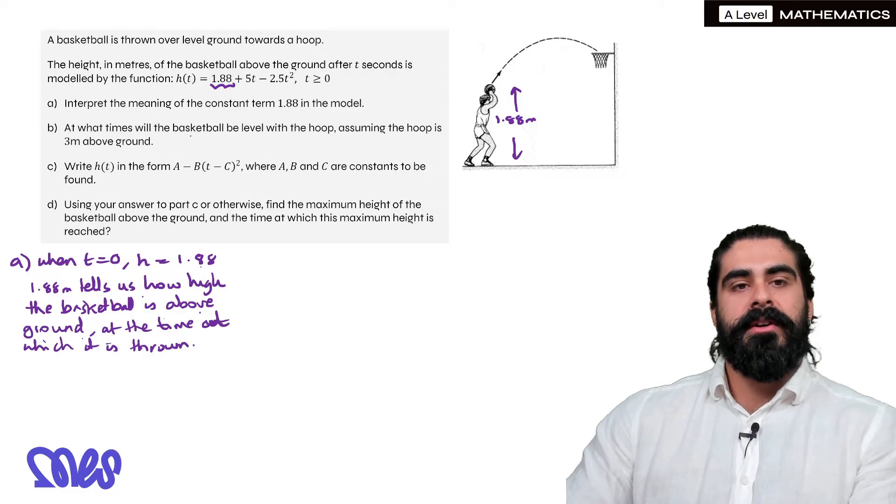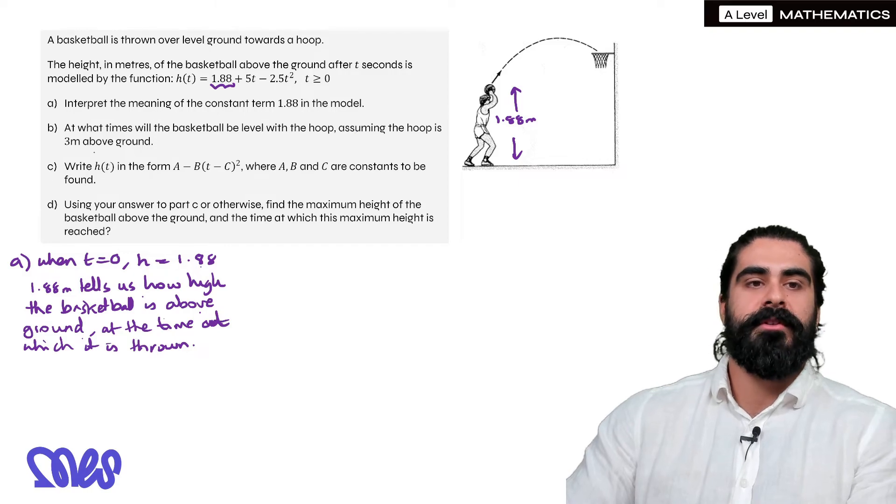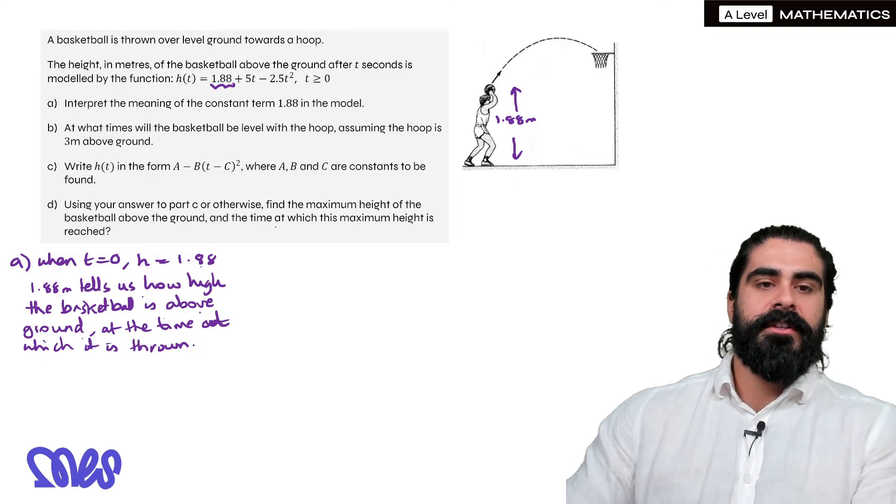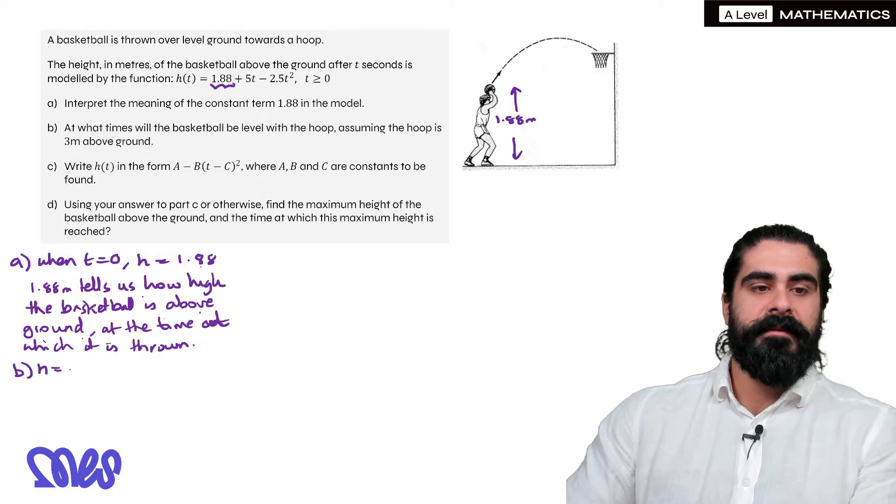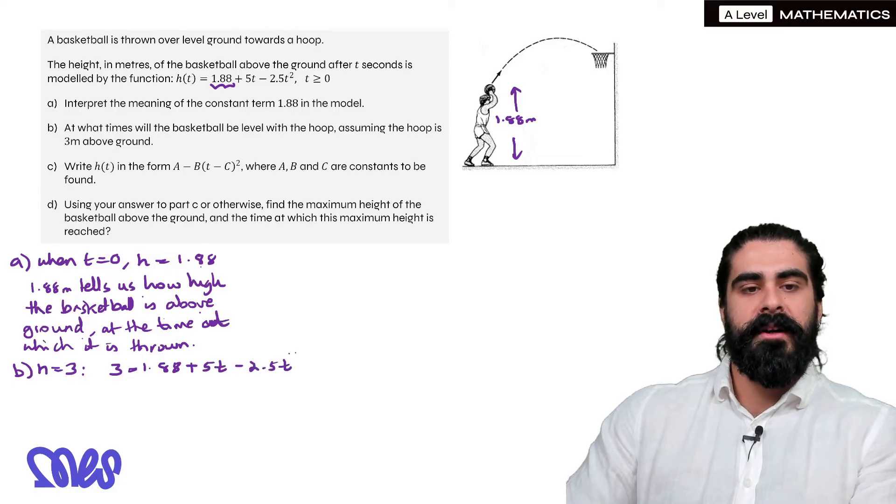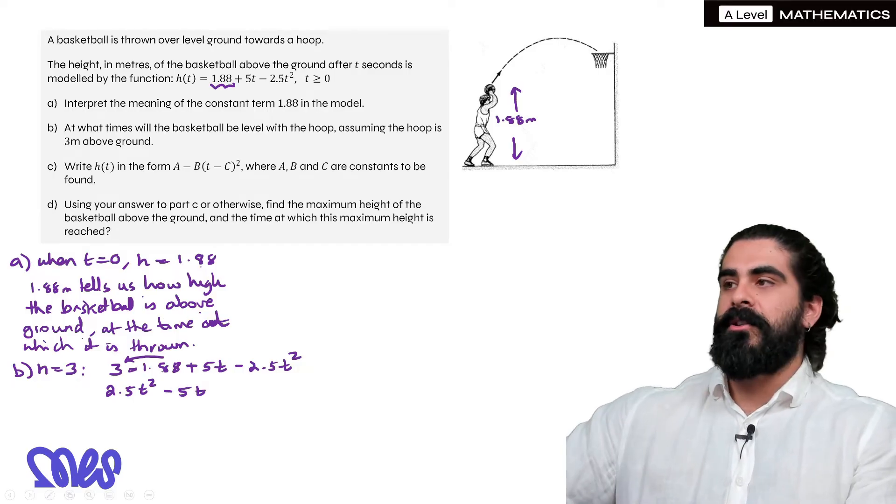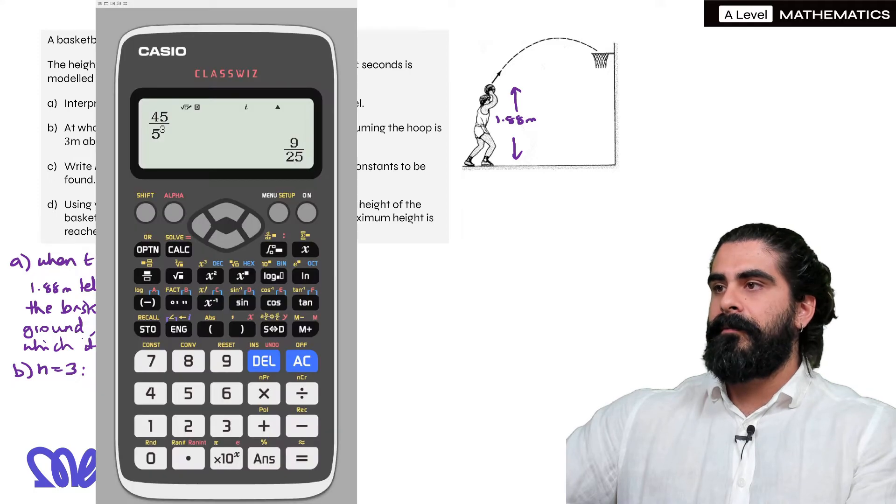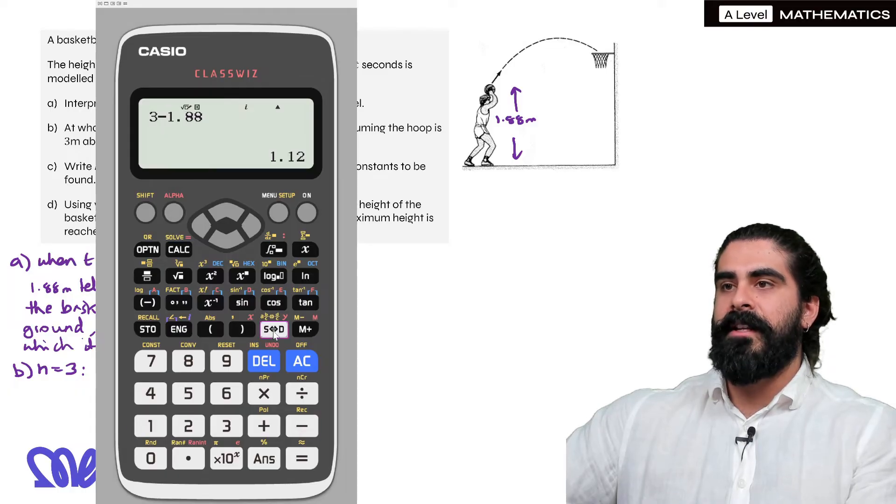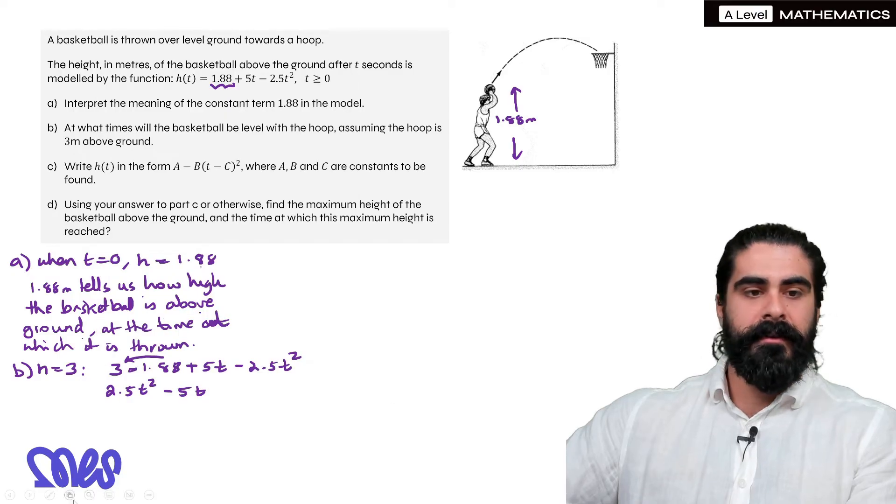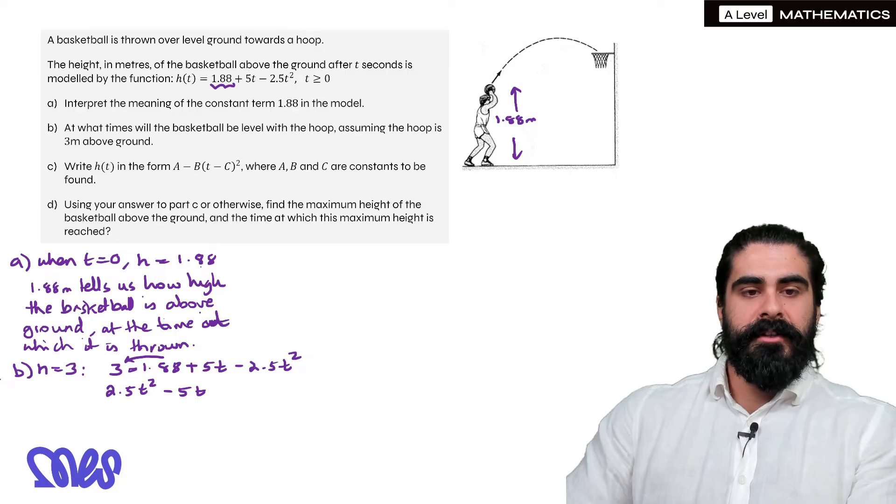At what time will the basketball be level with the hoop assuming the hoop is 3 meters above ground? So for this question we're just going to substitute h is 3. So we're going to have 3 equals 1.88 plus 5t minus 2.5t squared. Move everything to this side so that the t squared becomes positive. So we're going to get 2.5t squared minus 5t. Then we're going to do 3 minus 1.88. So we're doing 3 minus 1.88, we get 1.12.